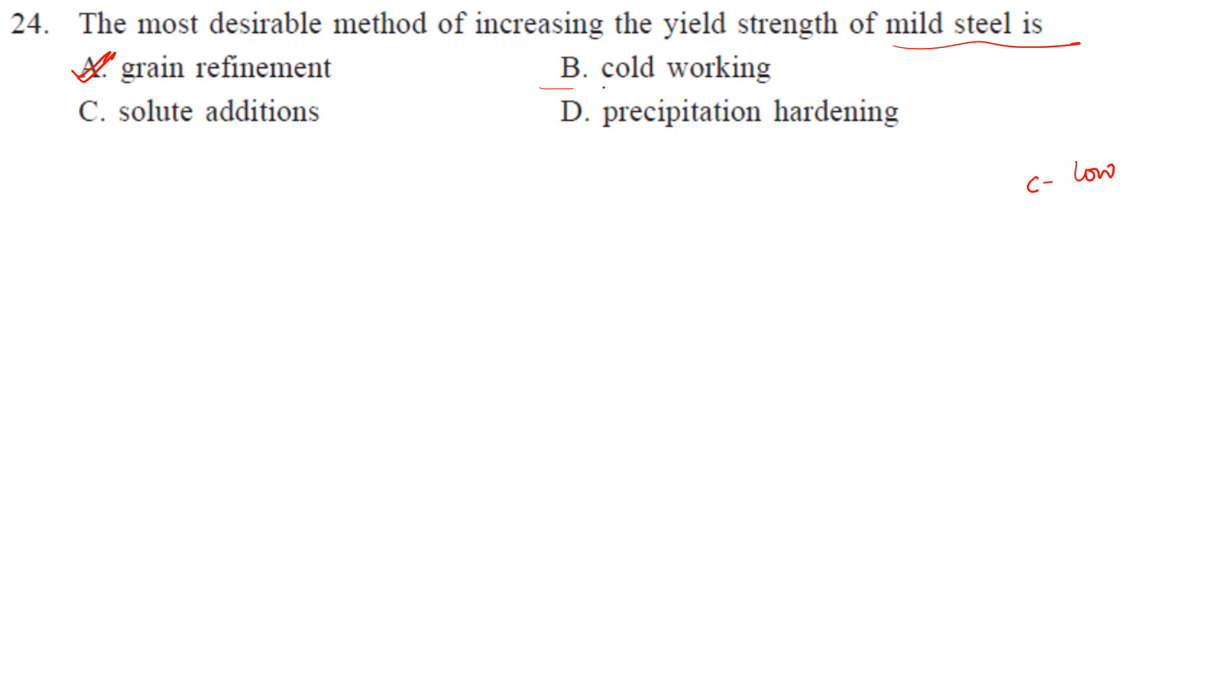We can do cold working, but here it's asking the most desirable method. In cold working, we load in a machine and do the cold working. Then what happens? The strength increases but the elongation decreases. If you decrease the grain size and increase the strength, the elongation decreases very less compared to cold working.